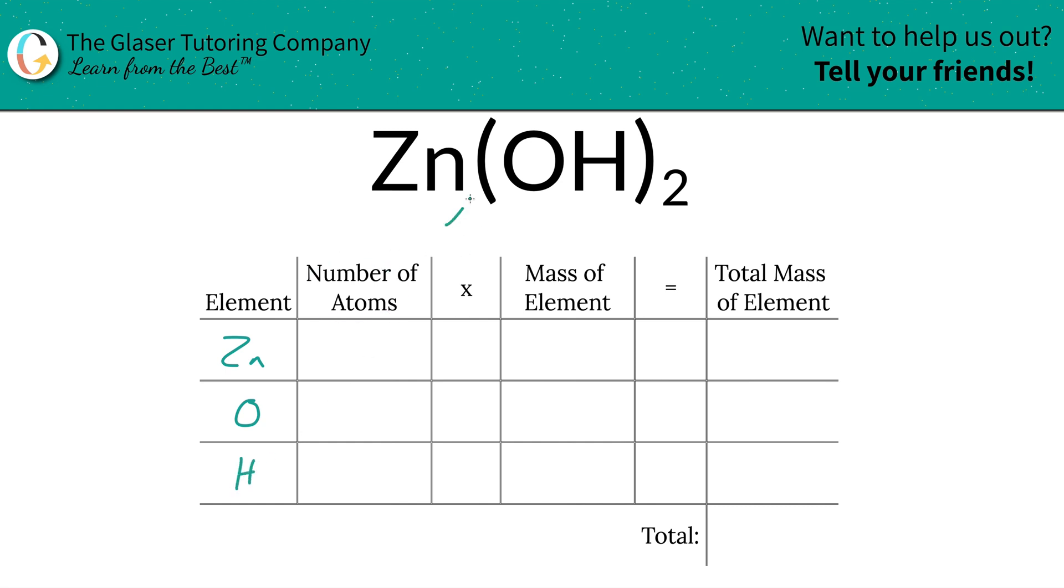Next is to identify the number of atoms of each, and that's where the subscripts come into play. Now if you don't see a subscript there, just put in a one. So we have one zinc, good.